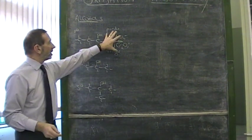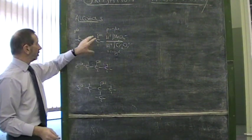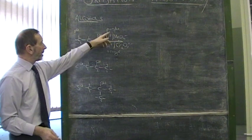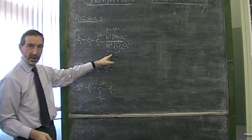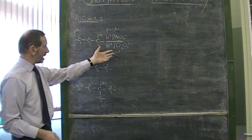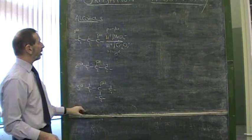When these oxidizing agents were added to a primary alcohol, the purple color changed to colorless, and the orange color changed to green. This is evidence that the alcohol was being oxidized.